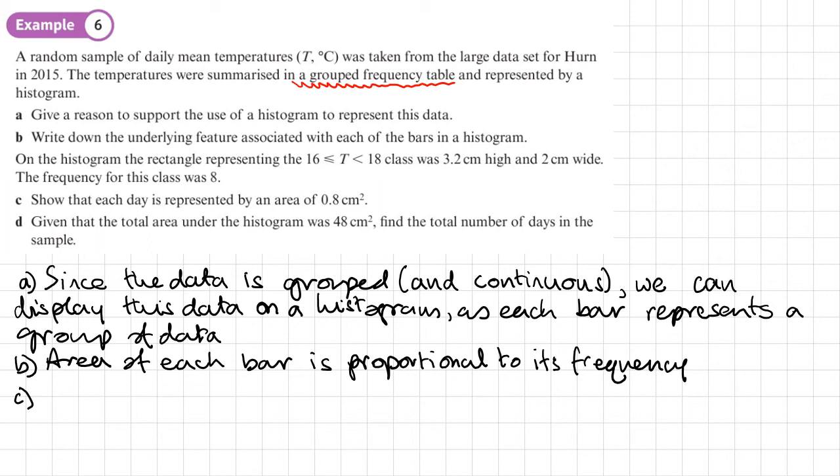Okay, so let's work out the area of this bar. So that's going to be 3.2 times by 2. So we get 6.4 centimeters squared. Now that represents a frequency of 8, which is 8 days. So what's the area needed for one day? Well, we're just going to do 6.4 centimeters squared, divide it by 8, and we get 0.8 centimeters squared as required. So we've just shown that that statement is true.